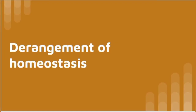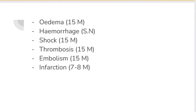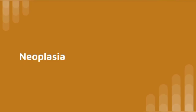Now we will talk about the chapter derangement of homeostasis. This is also a very important chapter — it has so many important questions and topics. Edema could be asked as a full 15-mark question. Hemorrhage is for a short note. Shock is a very, very important question for 15 marks. Thrombosis and embolism are also for 15 marks. Infarction is for 7 to 8 marks. Among all these questions, I cannot stress enough how important shock is — it is the most important of all.